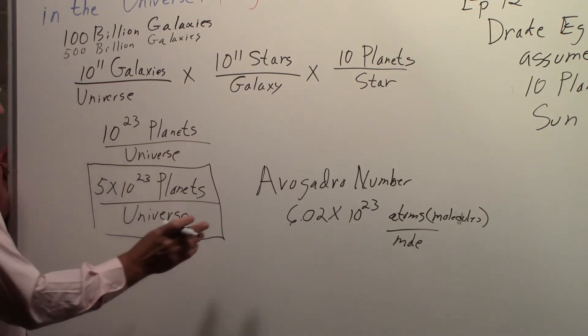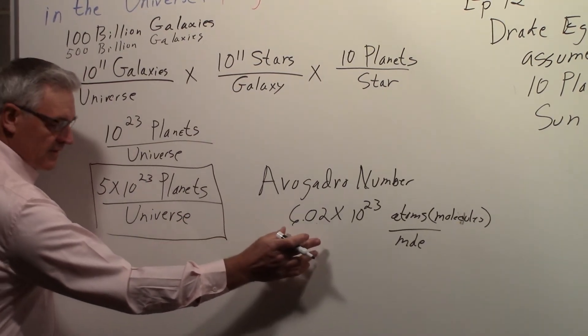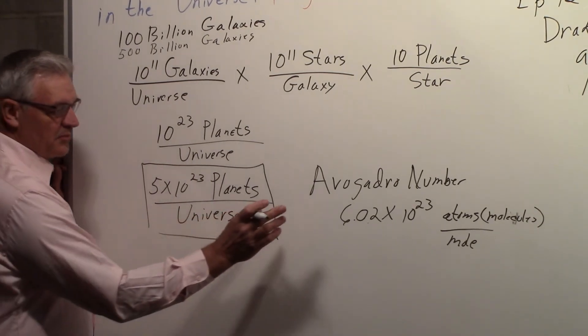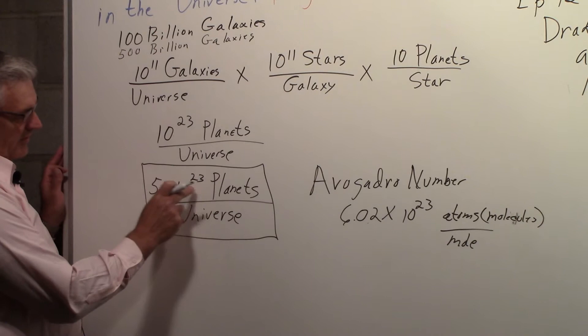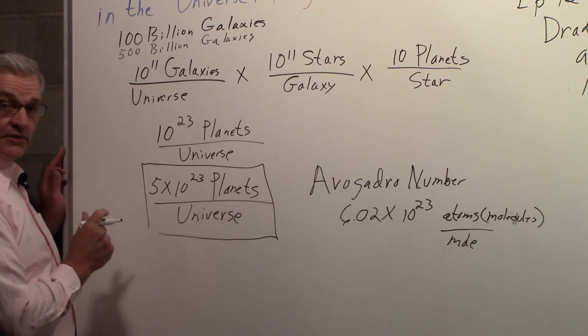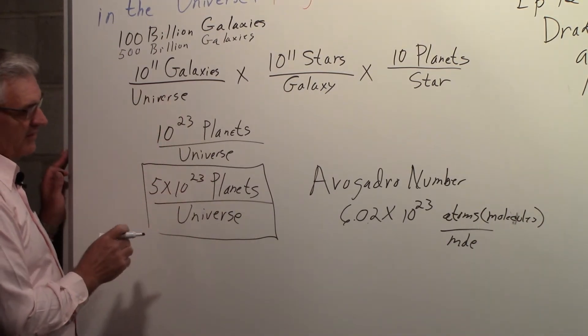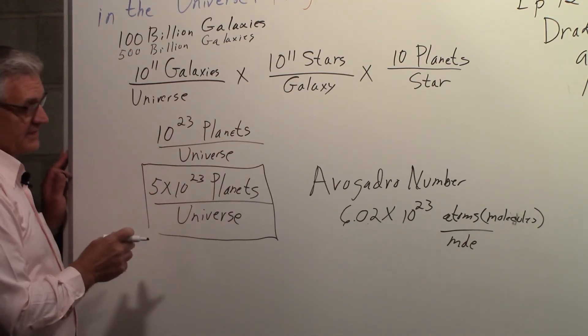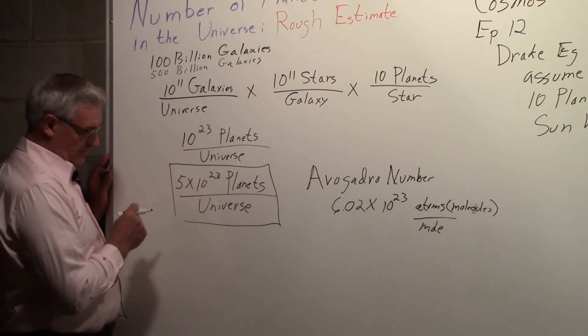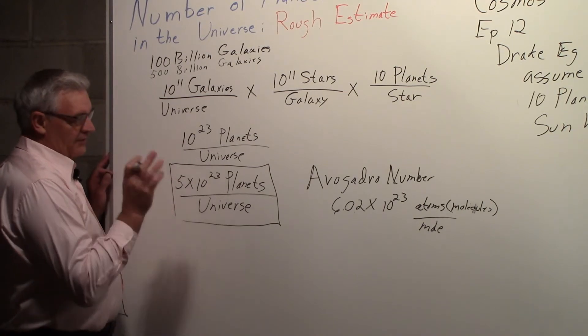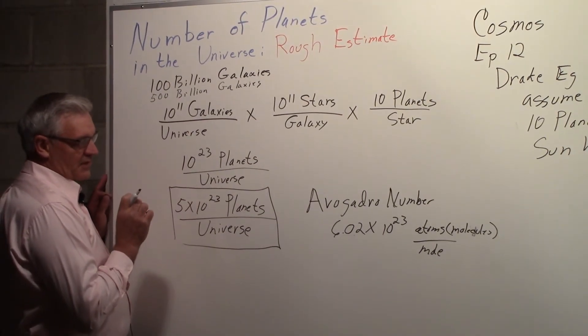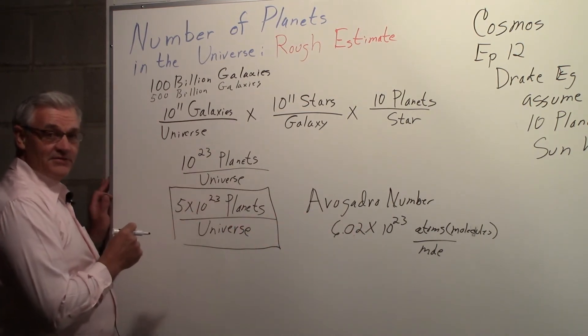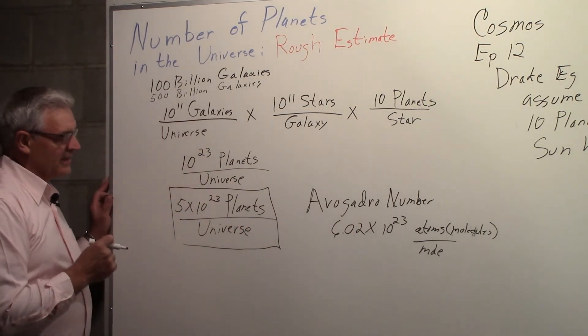So it's kind of interesting that there's a number we're familiar with, 6.02 times ten to the twenty-three, and it's very close to the five times ten to the twenty-three that we estimated here. And we could easily adjust some of these numbers to actually bring it up to six times ten to the twenty-three. But anyhow, knowing that Avogadro's number, that's an easy way to remember how many planets there might actually be in the universe.